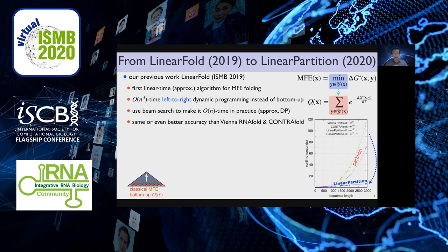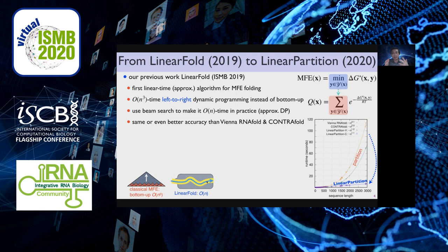For those who know our previous work LinearFold, which we presented at ISMB 2019, it is the first linear time algorithm to approximate MFE RNA folding. It is technically cubic time in the worst case, but it uses left-to-right dynamic programming instead of bottom-up, and because of this left-to-right nature we can use beam search on top of it, so we only care about the high-probability states in the search space and ignore the rest. This gives a linear time algorithm in practice — it is approximate, but it still considers exponentially many alternatives in linear time, and surprisingly it has even higher accuracy than the cubic time baselines even though it's much faster.